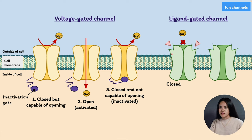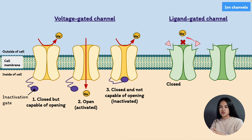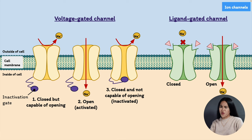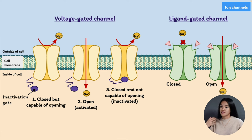Here we have the nicotinic acetylcholine receptor in its closed state — not allowing any ions to pass through the channel. When the ligand acetylcholine binds to the channel, it changes the conformation of the channel and opens it up, allowing ions — in this case sodium ions — to flow into the cell down its concentration gradient. These are the two main types of gating: voltage gating and ligand gating. There are also other types regulated by physical changes such as stretch-sensitive channels and temperature-sensitive channels.